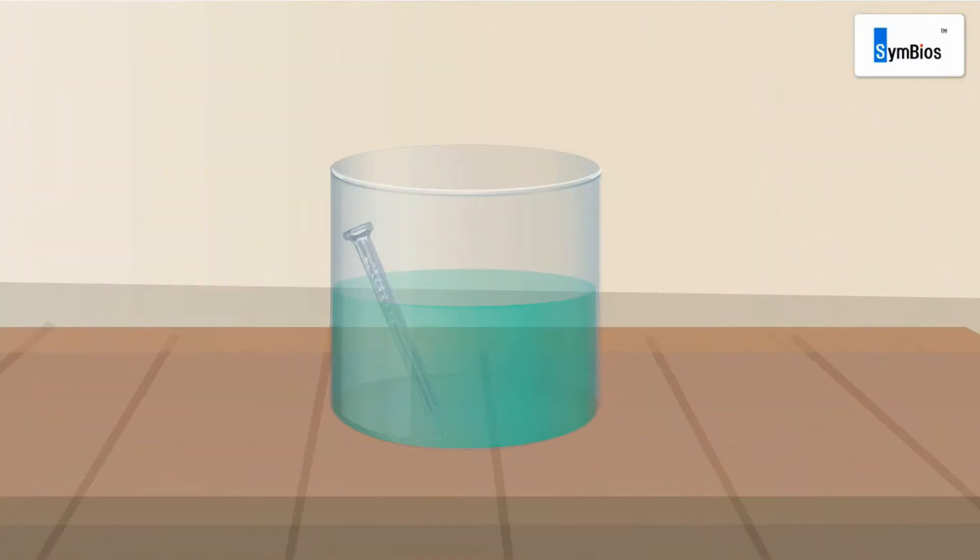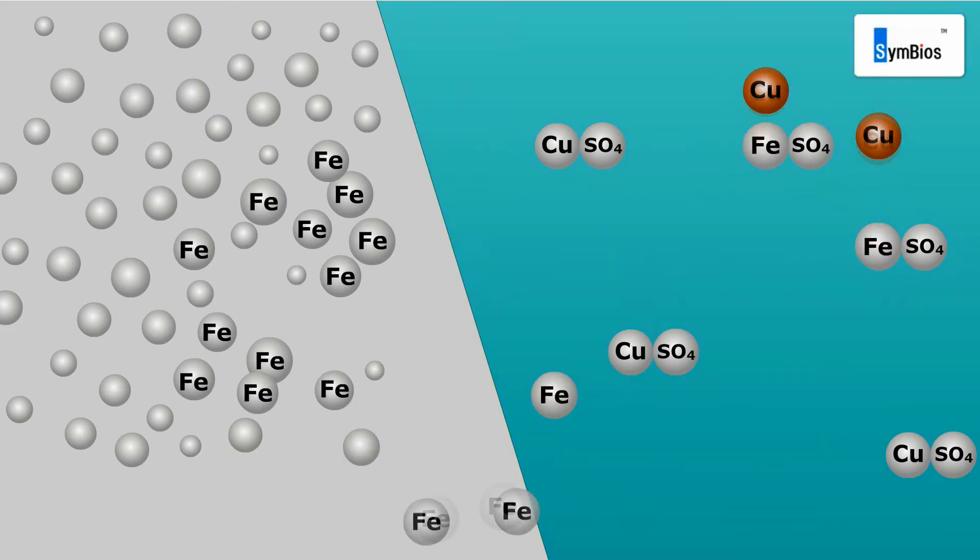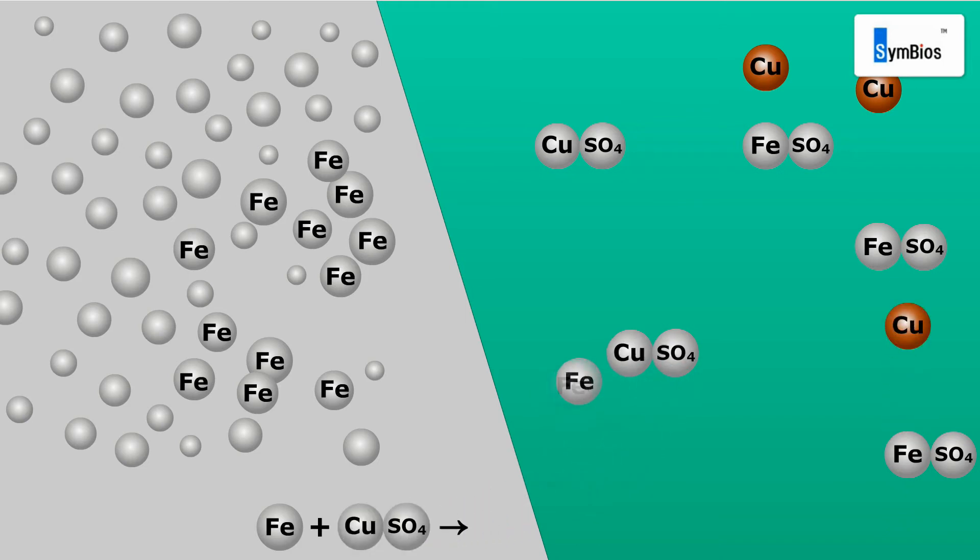What happens in this reaction is: When the iron from the nail reacts with copper sulfate solution, the iron atom displaces copper from the copper sulfate compound. The iron itself combines with the sulfate group producing another compound, i.e. iron sulfate.